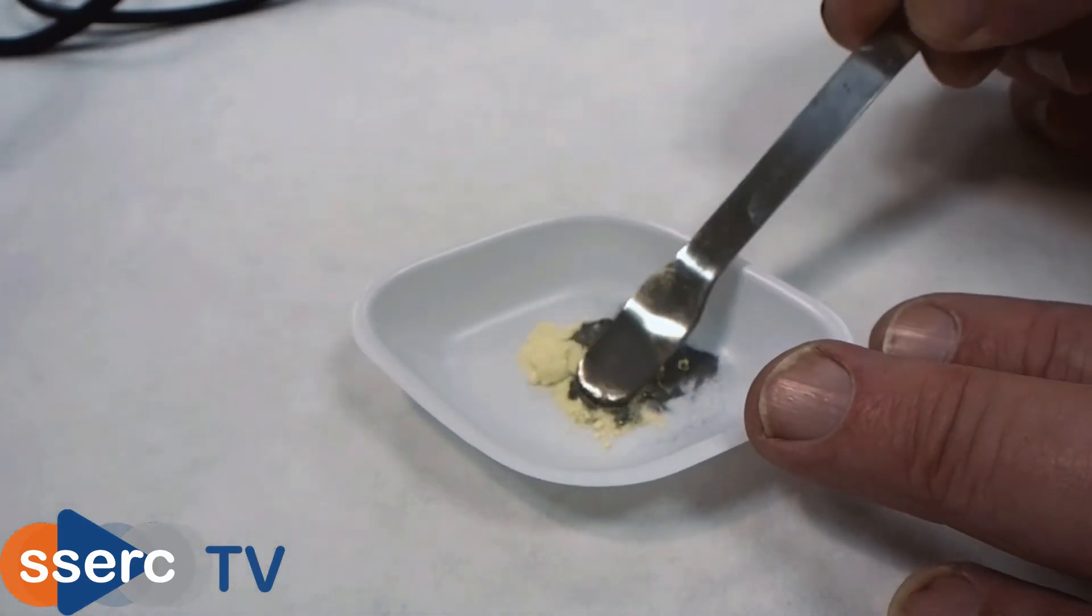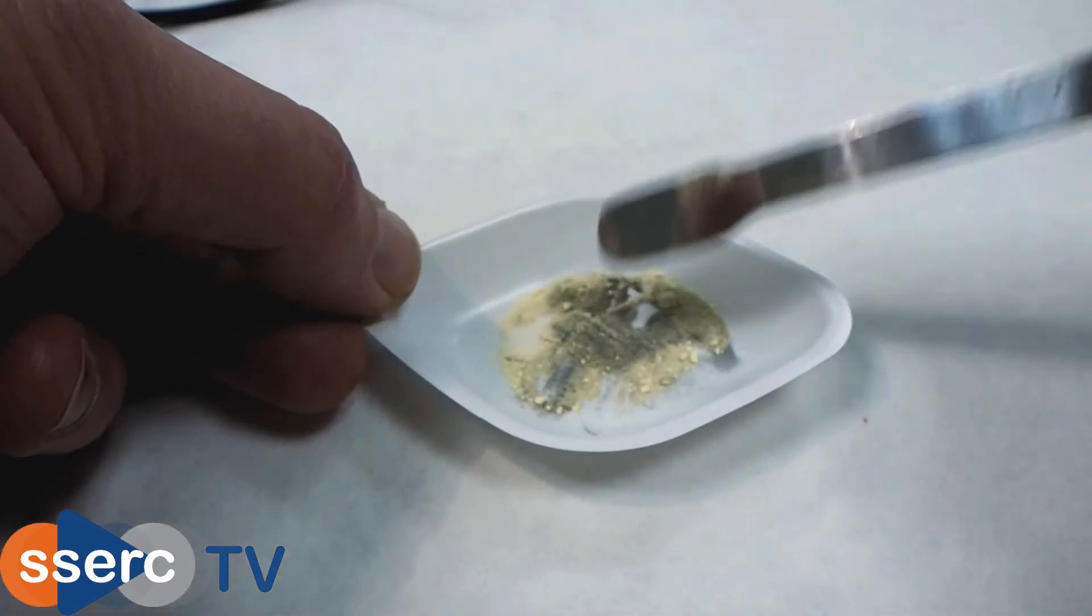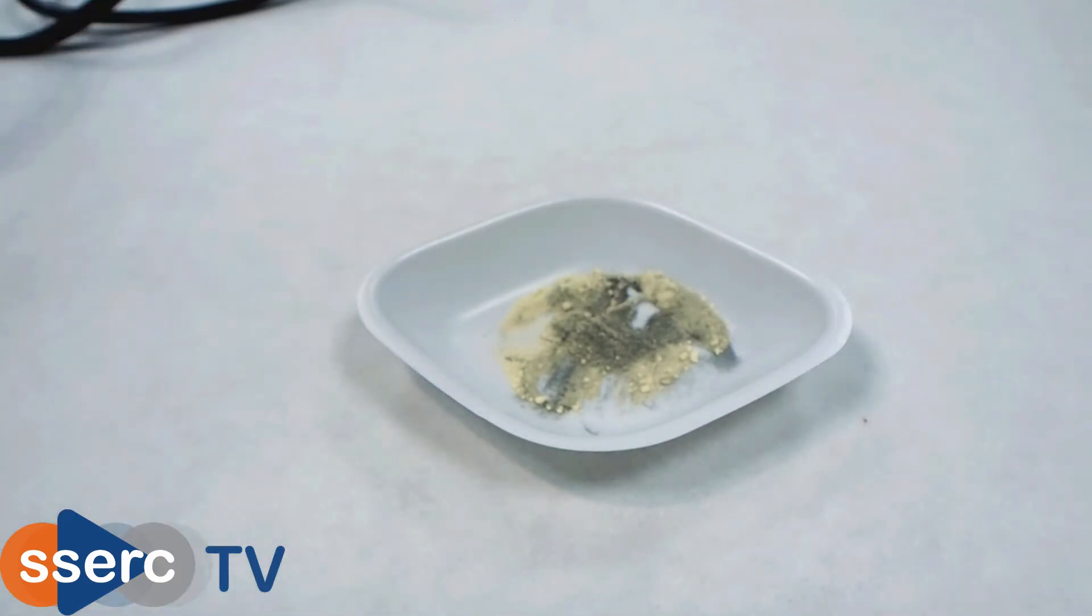First we prepare the mixture. We weigh out 0.25 grams of powdered iron and 0.15 grams of powdered sulfur and mix them thoroughly.